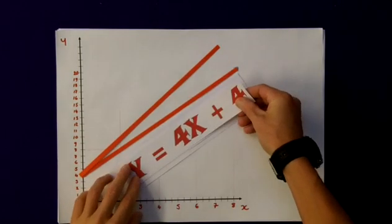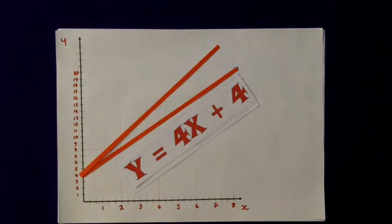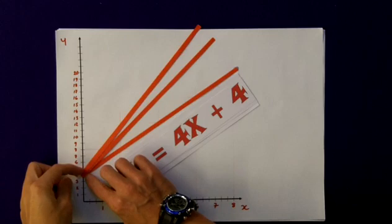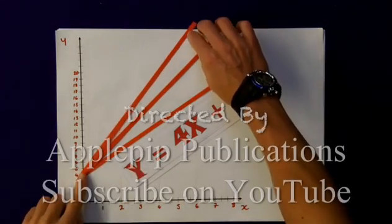The equation y equals 4x plus 4 will be slightly steeper again, but the intercept point will still be at plus 4.